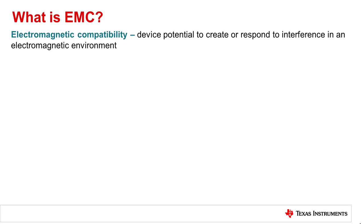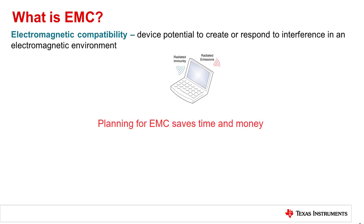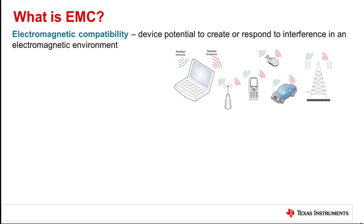Why does EMC matter? EMC describes a device's potential to create or respond to interference in an electromagnetic environment. Electronic circuits act as potential receptors to detect electromagnetic interference, or EMI, and planning and designing for electromagnetic compatibility early in the design process will save the difficulty of troubleshooting or fixing EMC issues later.